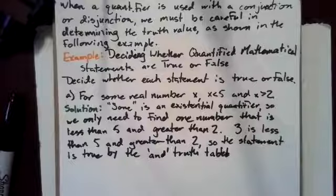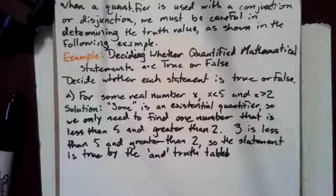For some real number X, X is less than 5 and X is greater than 2. 'Some' is an existential quantifier, so we only need to find one number that is less than 5 and greater than 2. Three is less than 5 and greater than 2, so the statement is true by the and truth table.